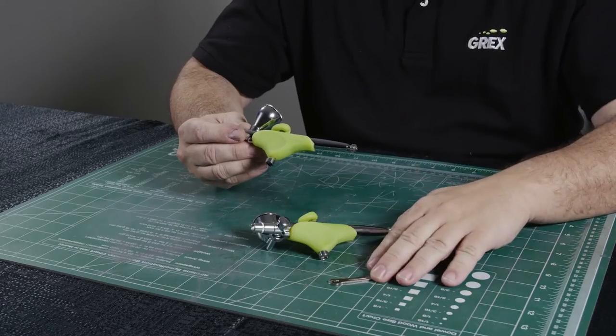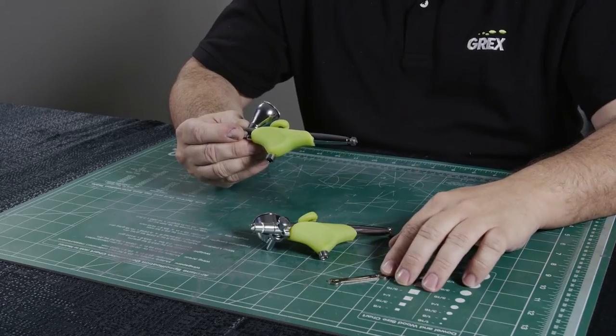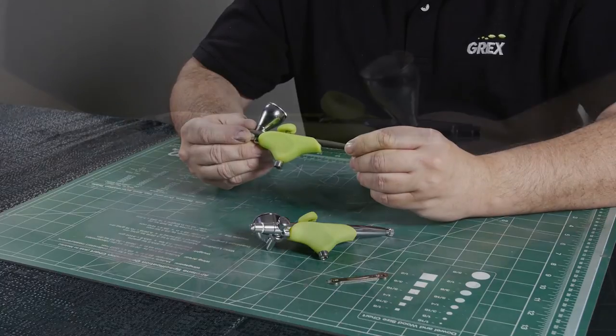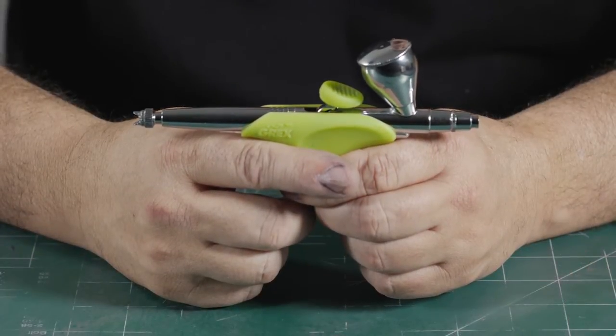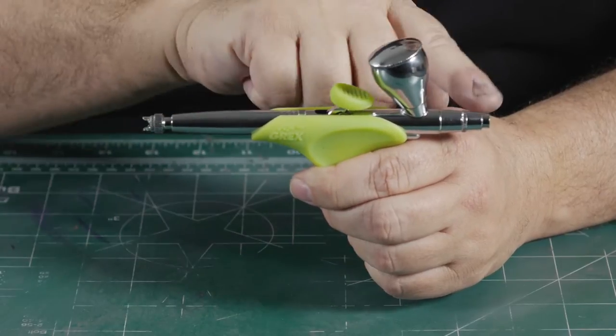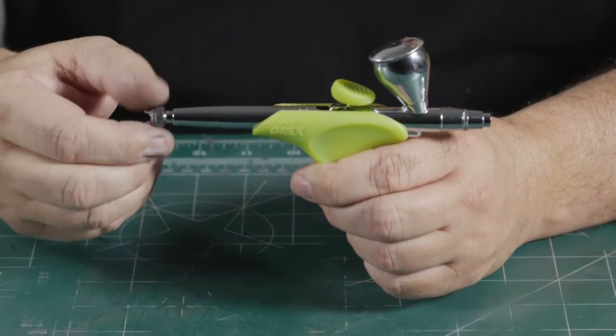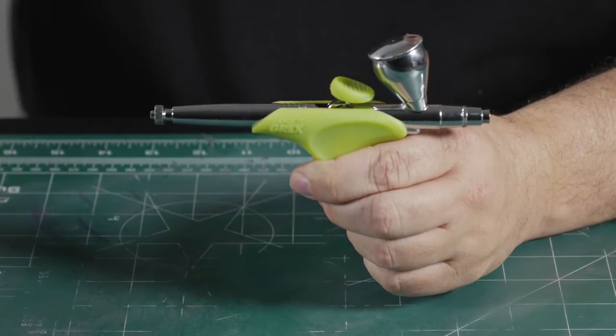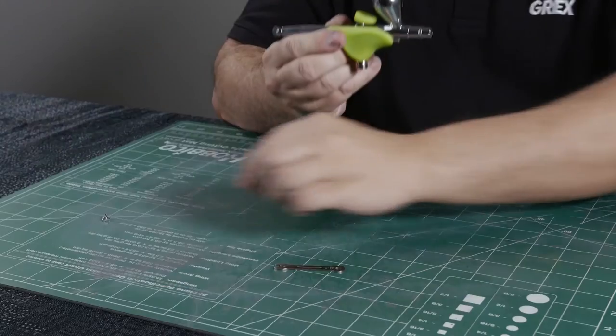To do this we only need one tool which is the wrench that comes in the box with the airbrush. With the new Genesis line of airbrushes, they have a magnetized crown and nozzle, so we're going to simply remove those right now and put those off to the side.